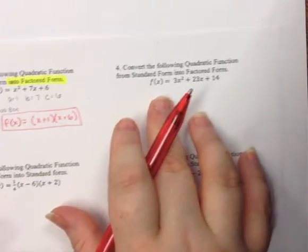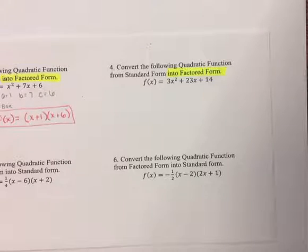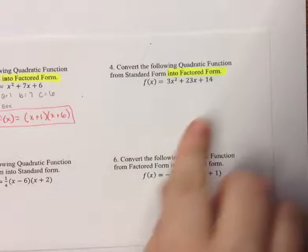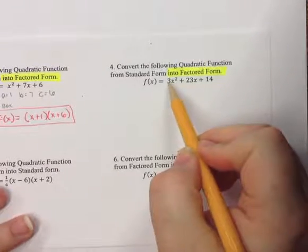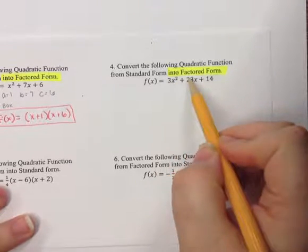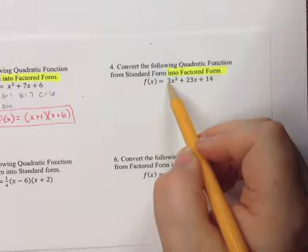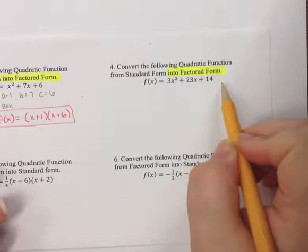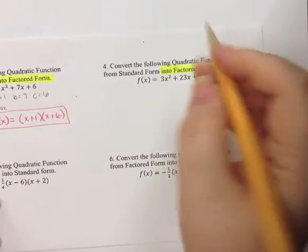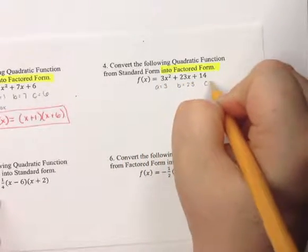Again, we're going to go from standard form into factored form, which means we want to factor. To factor, we look for our GCF. Our smallest number is 3, but 23 cannot be divided by 3, so the GCF is 1, which will not affect the problem. We go straight into MACAB since there are three terms. Our A is 3, our B is 23, and our C is 14.